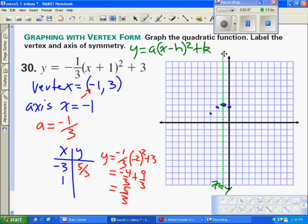We'll plug that in: y equals negative one-third times 1 plus 1 is 2, squared is 4, plus 3. We ended up with the same equation as before: negative four-thirds plus 3, which is nine-thirds.